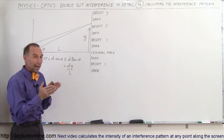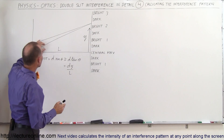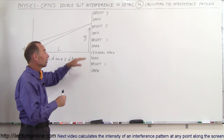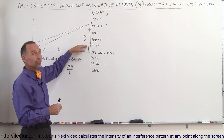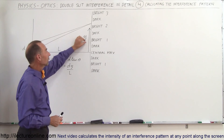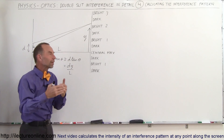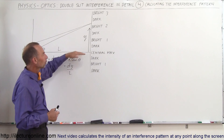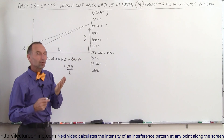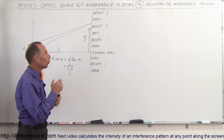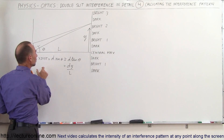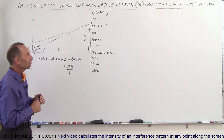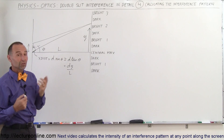What happens is when the two rays come together and one ray had to travel a half a wavelength farther than the other, you'll see a dark spot. If the two rays come together and one ray had to travel a whole wavelength farther than the other one, you'll see a bright spot and so forth. In order to find these locations, we need to set the extra distance equal to the distance traveled relative to a wavelength, to find the dark and bright spots.